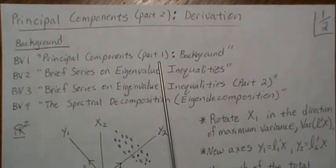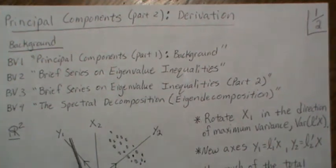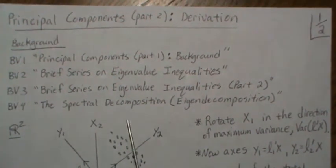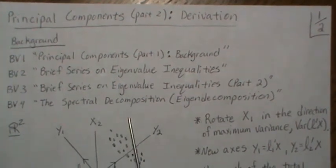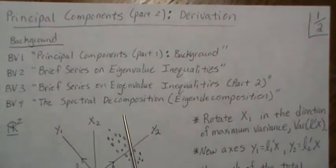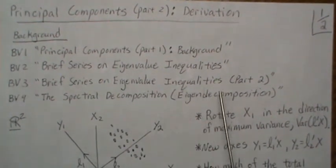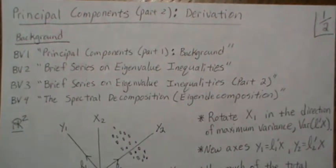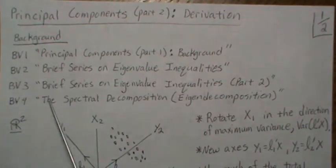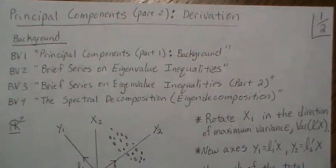Of course, look at part one of this video, where we talk about axis rotations and ellipses. And actually BV4 — as I'm writing these down — I stopped that video just before a couple of theorems where I used a spectral decomposition. So technically I don't use it in this video, but part three I will.